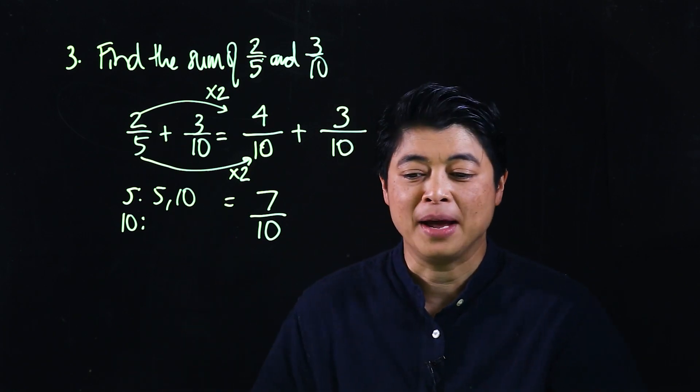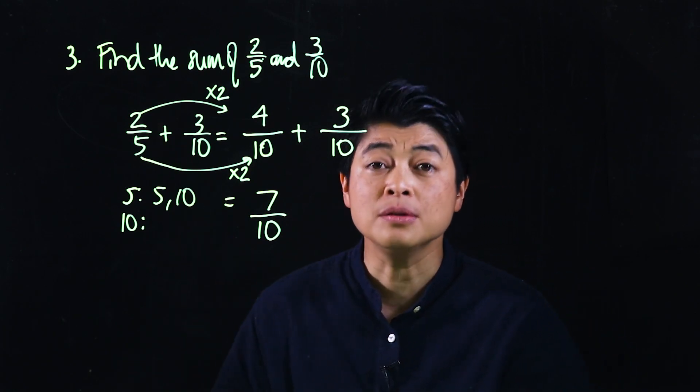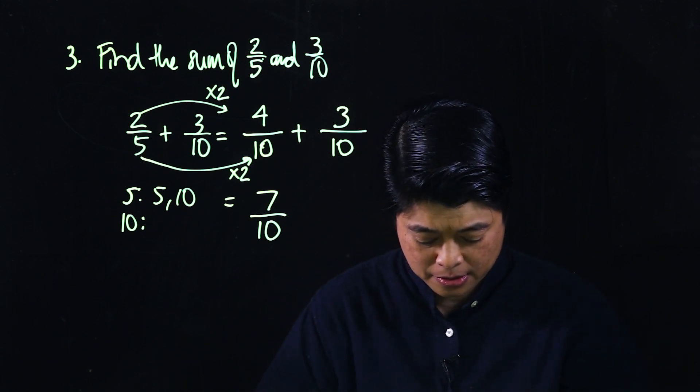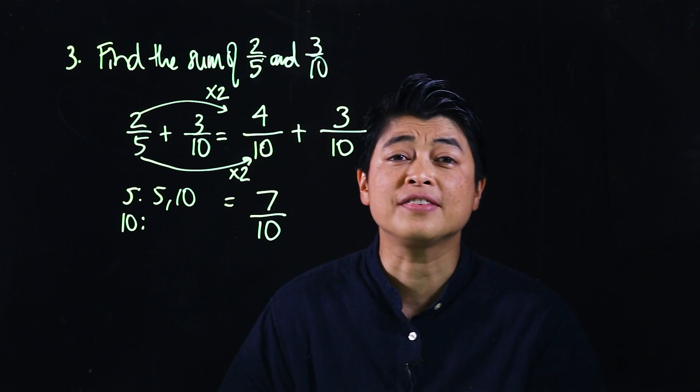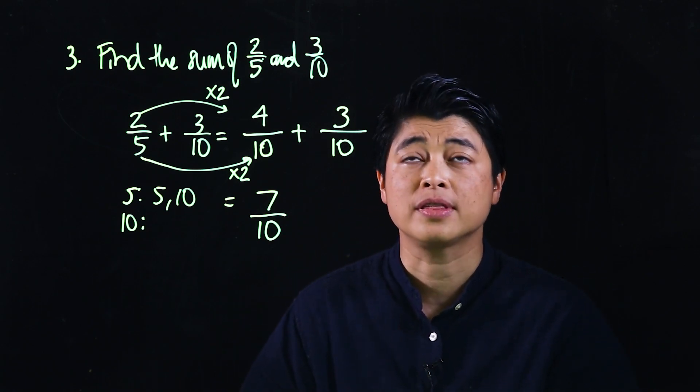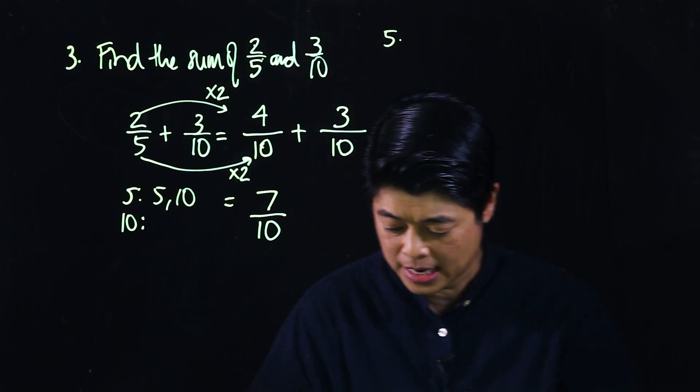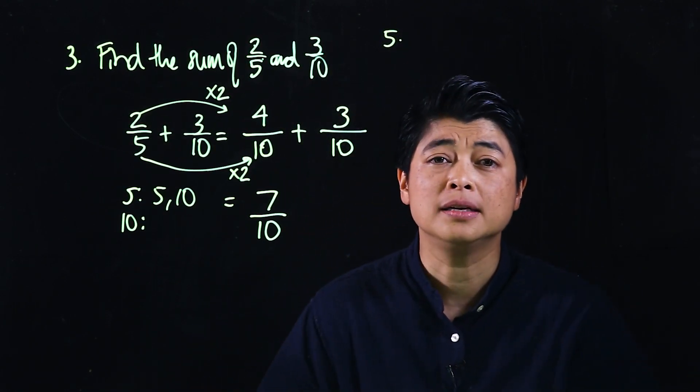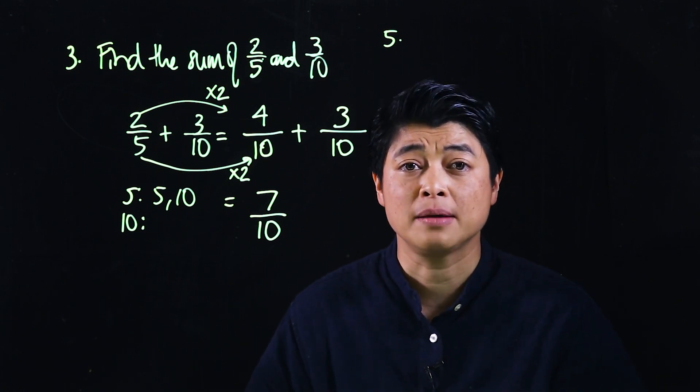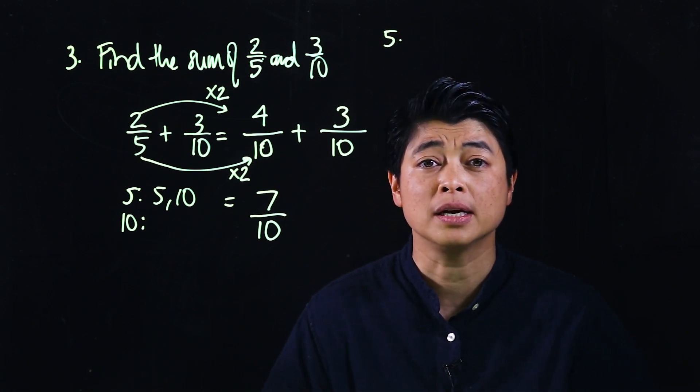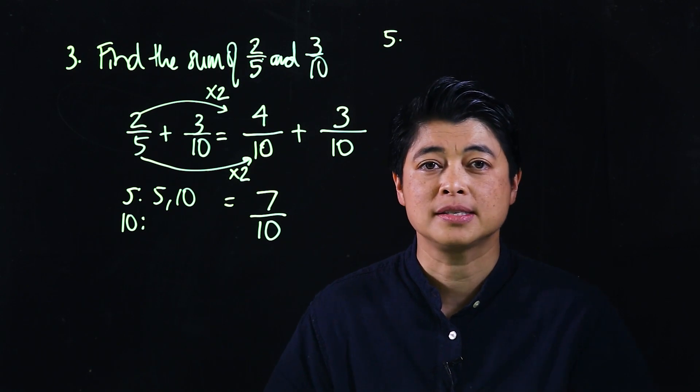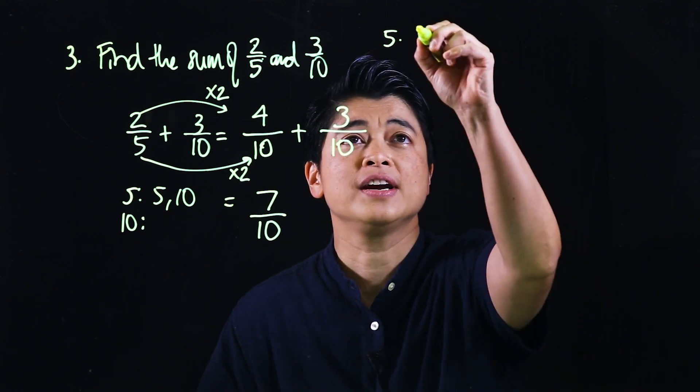On page 82, problem number five says find the difference between five-sixths and seven-twelfths. This one has a bar model, but we can't depend on bar models all the time because not all problems will have them.